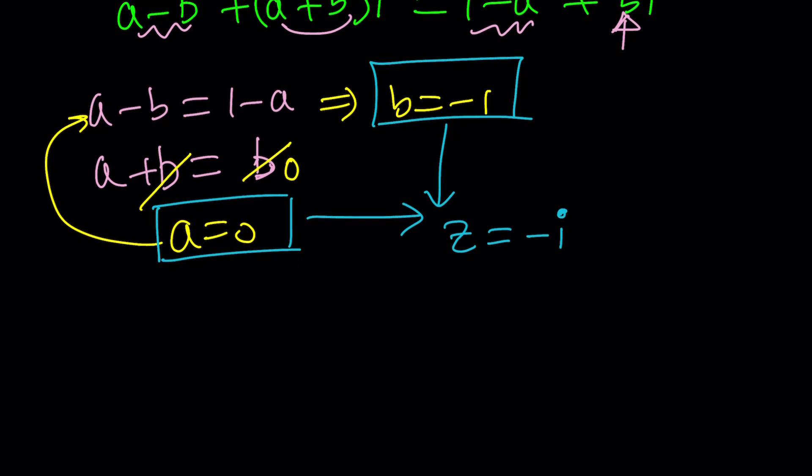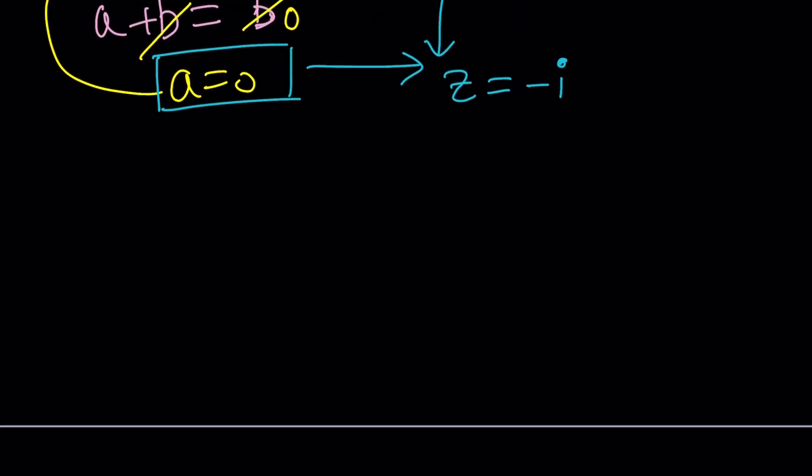So the second method is actually also really cool. And I don't know if it applies to every scenario, but it applies in this case at least. So here's how it works. Since we have Z and Z bar in the same equation, why don't we use the properties of conjugates? What are properties of conjugates? Let's talk about it briefly.